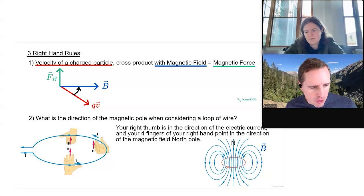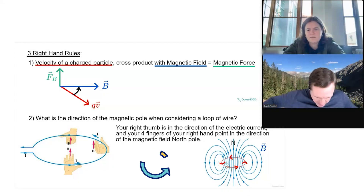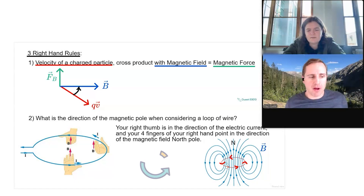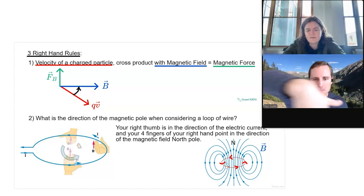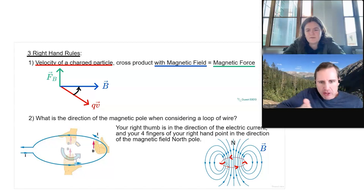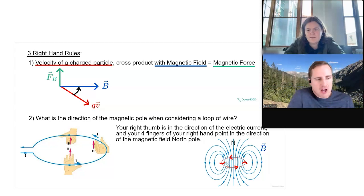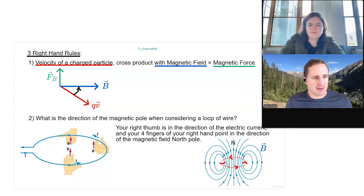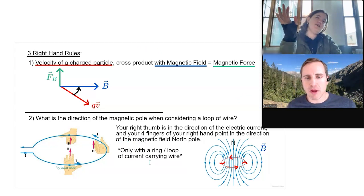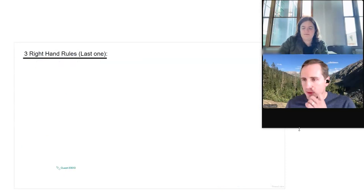The electric current is going this way — counterclockwise as viewed from above. What you do is take your thumb and point it in the direction of the current, and the fingers show the way the magnetic field comes through the loop. This applies only with a ring or a loop of current-carrying wire.